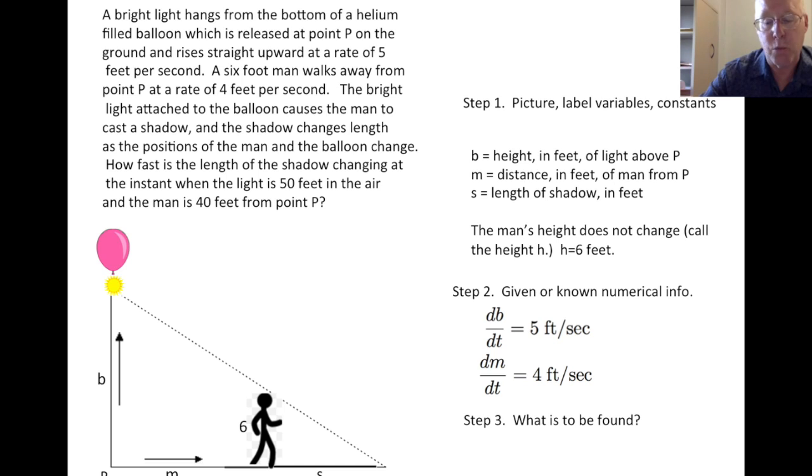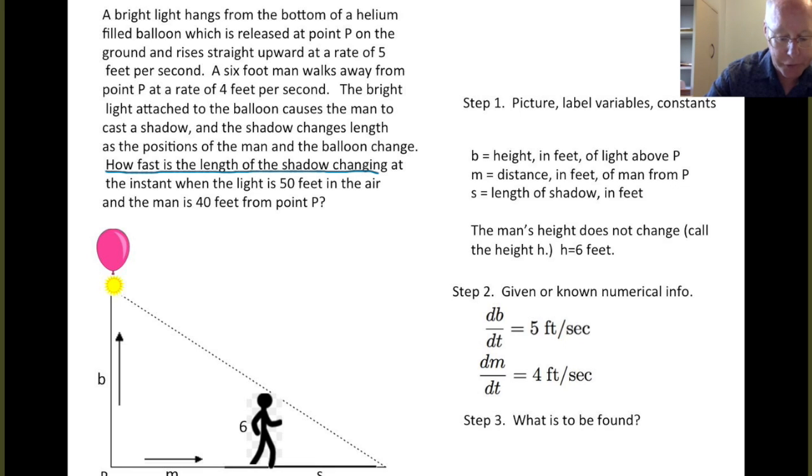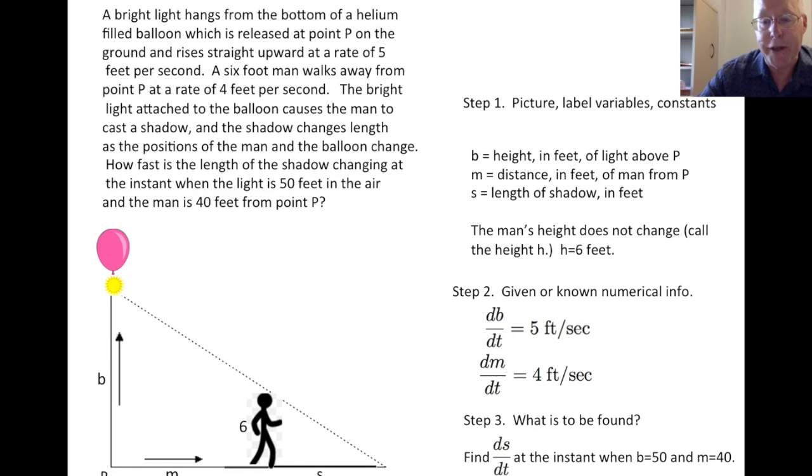One other change in quantity that's important is what is the quantity that is to be found. What is it we want to know? What are we trying to answer? And of course, again, we can find that statement in the problem. We want to know how fast is the length of the shadow at a particular instant in time. So in other words, what is dS/dt at the instant when B is 50 and M is 40? Again, as we said in the last video, do not at this point set B equal to 50 and M equal to 40. B and M are changing quantities. We have to account for that change first. And then later on, we'll figure out what the dS/dt is at the particular instant when B equals 50 and M equals 40.